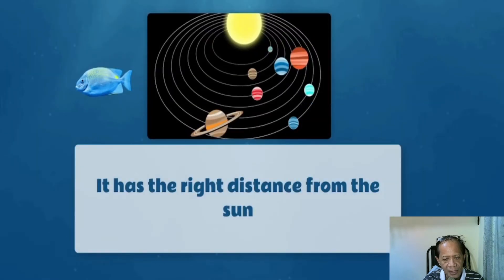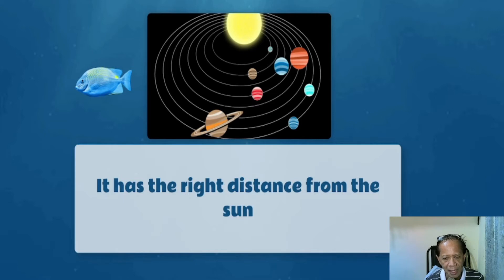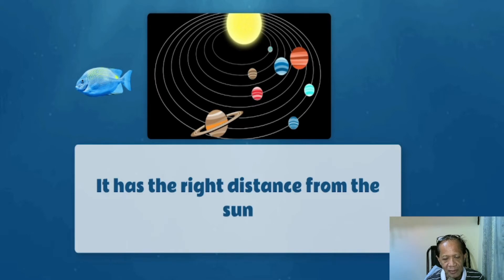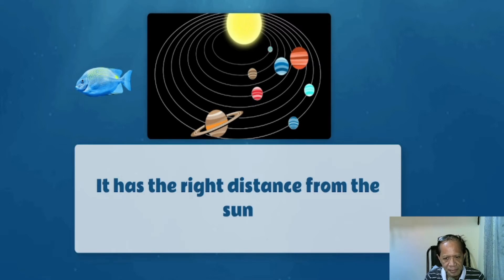Another factor is that Earth has the right distance from the sun. Right distance means it's not too far and not too near. Kasi nga if our planet is too near the sun, magiging mainit yung planet natin, and if it's too far, sobrang lamig naman. Because ang planet Earth natin has the right distance from the sun, maganda yung temperature — very ideal para magkaroon ng life forms.